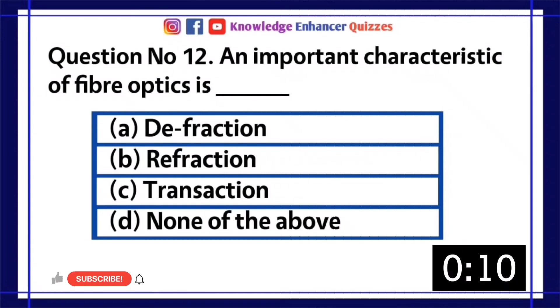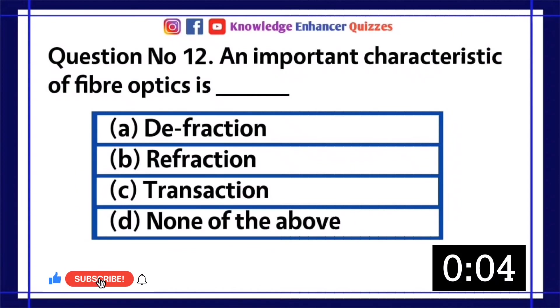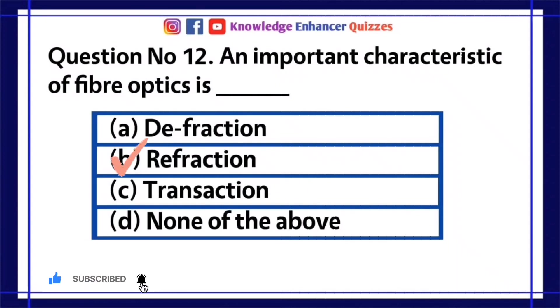Question number 12: An important characteristic of fiber optics is dash. A. Diffraction. B. Refraction. C. Transaction. D. None of the above. Option B is the right answer.